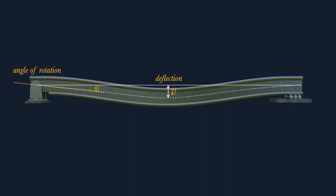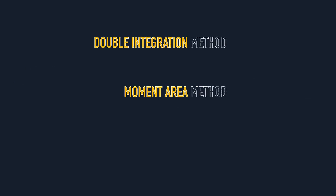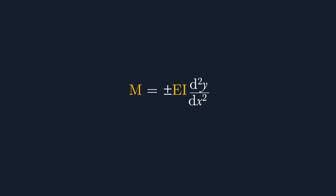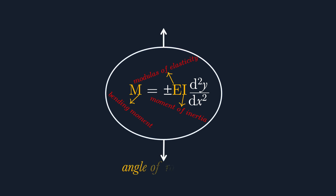We have different methods to find the deflection of beams: the double integration method, the moment area method, and Macaulay's method. The first two methods are usually used when you have single loads, and the last method is used for several loads. The formula we use is M = EI·(d²y/dx²), where M is the bending moment, E is the modulus of elasticity, and I is the moment of inertia. The second derivative d²y/dx² helps us find the angle of rotation and the deflection of the beam.